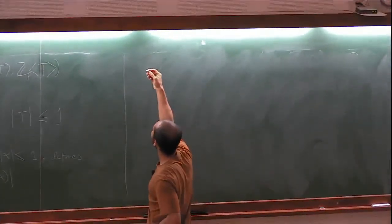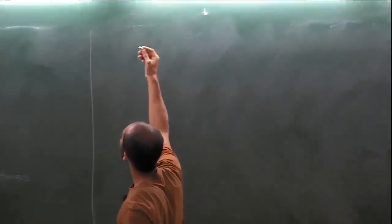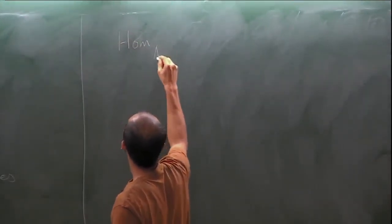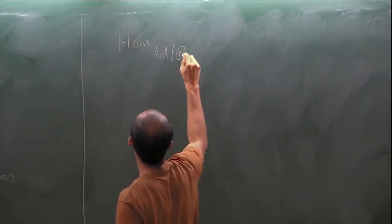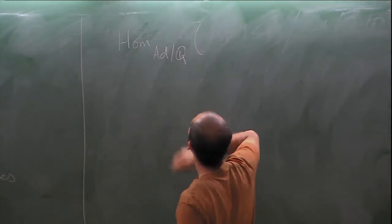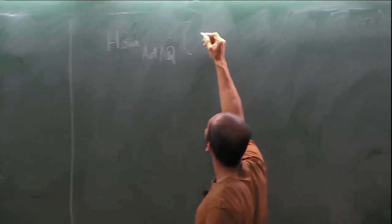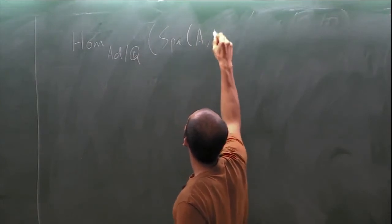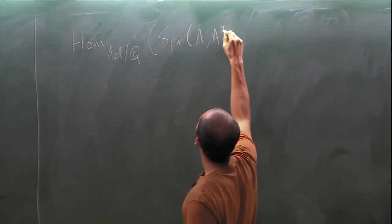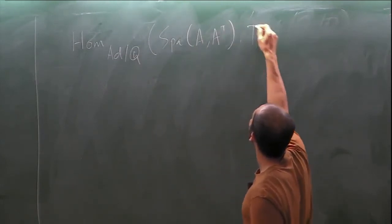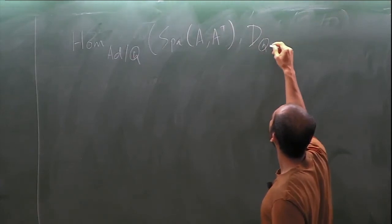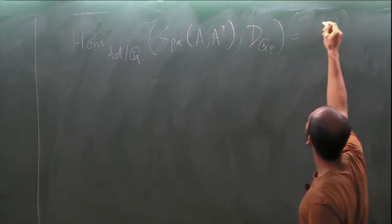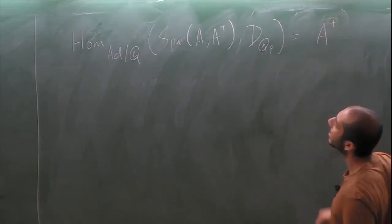In the category of adic spaces over a non-Archimedean field K, morphisms from spa(A, A+) to D_{Q_p} will be exactly A+. That is the functor being represented.